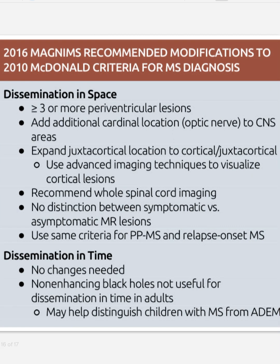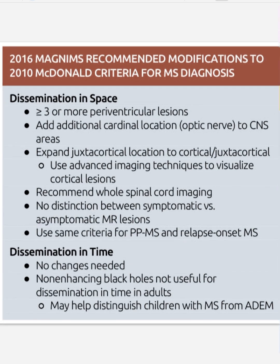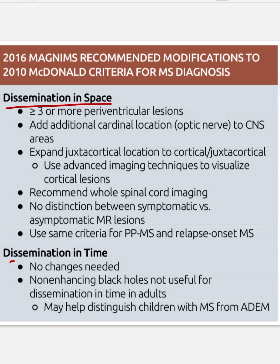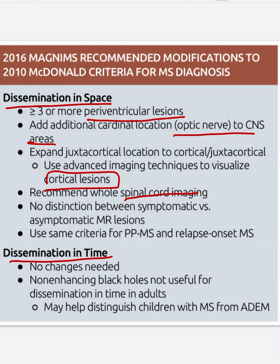The revised criteria recommend modifications to the 2010 McDonald criteria. For dissemination in space, three or more periventricular lesions are required. Additional cardinal locations include optic nerve and juxtacortical or cortical regions — using advanced imaging to visualize cortical lesions. Whole-spine imaging is included. No distinction is made between symptomatic and asymptomatic MR lesions. The same criteria are used for primary progressive MS. For dissemination in time, no non-enhancing black holes are useful in adults, but these may help distinguish MS from ADEM.